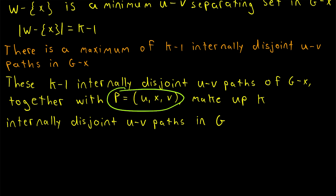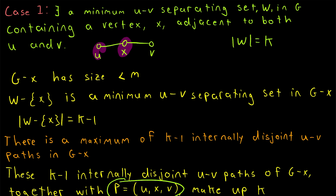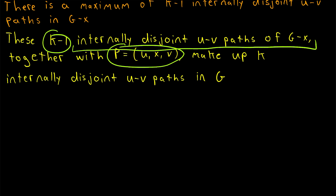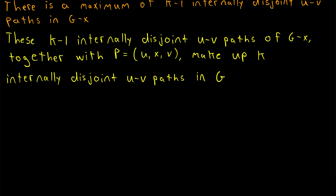Remember that vertex X is the vertex of our minimum u-v separating set W in G which is adjacent to both u and v. So that gives us one u-v path that isn't in G minus X, since G minus X doesn't contain X. We include that path along with the K minus 1 internally disjoint u-v paths in G minus X, and that guarantees us K internally disjoint u-v paths in G. That proves the theorem in case 1.